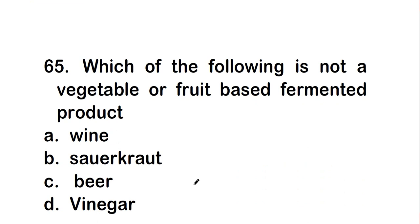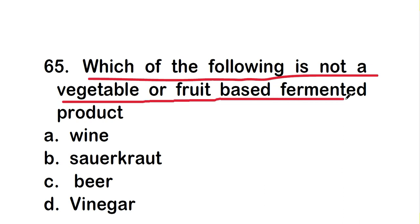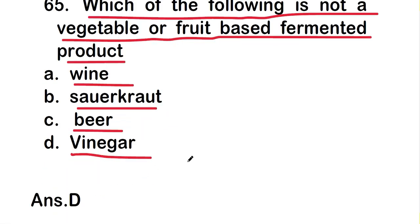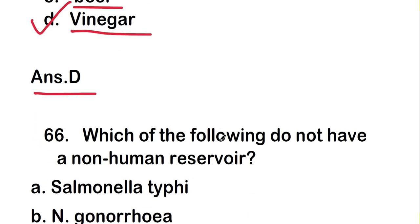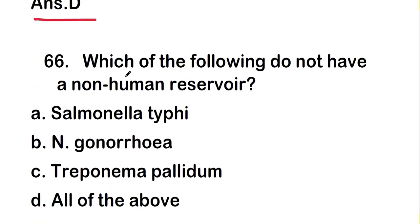The next question is: which of the following is not a vegetable or fruit-based fermented product? Options are wine, sauerkraut, beer, or vinegar. The right answer is option D, vinegar. Vinegar is not a vegetable or fruit-based fermented product.